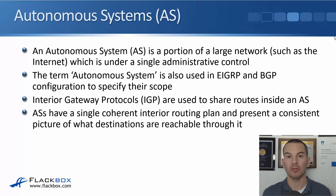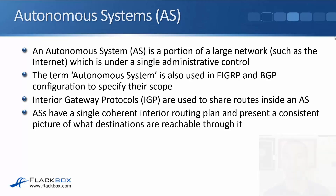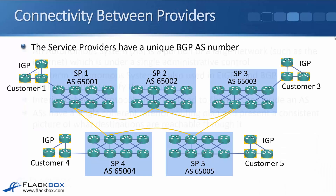An IGP works within an AS, but for routing between different ASes we use BGP. When we use BGP, the service providers each have a unique BGP AS number. As overlaid in the diagram, each of those different service providers — SP1 through SP5 — now has an AS number. BGP is aware of that AS number and uses it for routing traffic between the different service providers, as you'll find out in the next lecture.